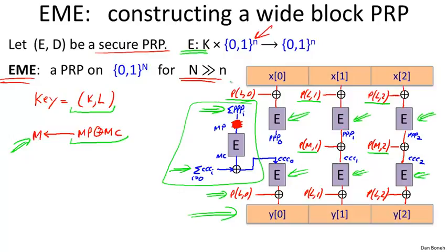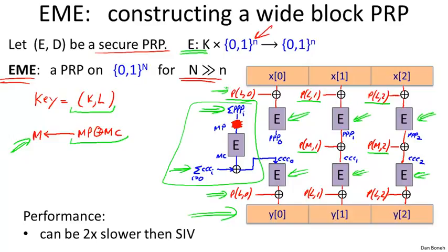There's a theorem showing that if the underlying block cipher E is a secure PRP, then EME is a secure PRP on the larger block space. Performance requires two applications of E per input block, which can actually be slower than SIV. If SIV is implemented properly with a very fast PRF to derive randomness, SIV can be twice as fast as EME. So the PRP construction is best for short messages, while SIV is preferred for encrypting longer messages deterministically.